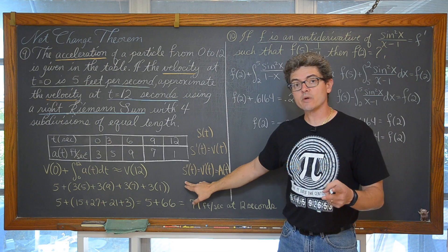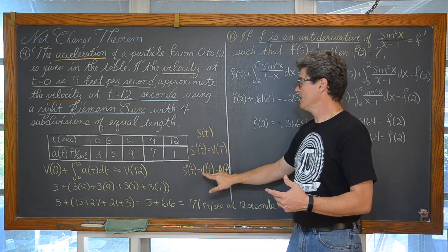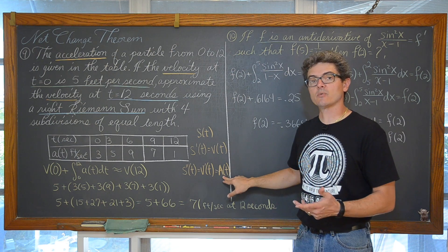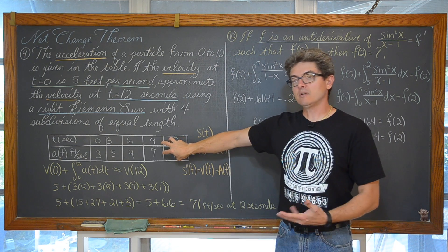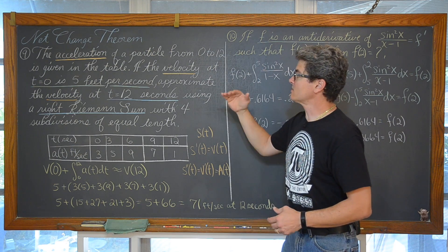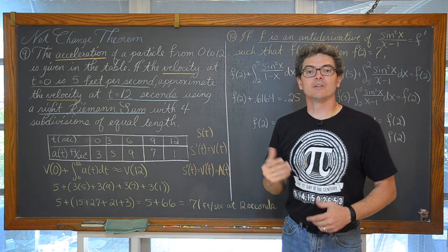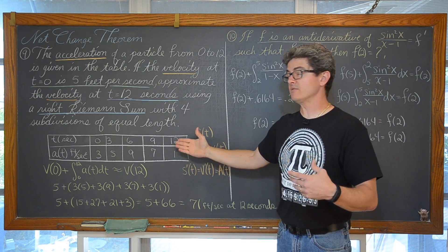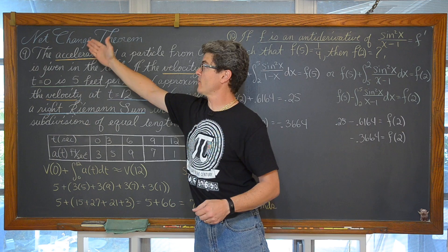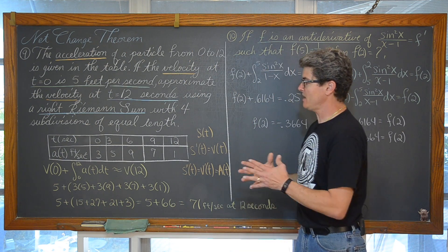And then the second derivative of the position is the first derivative of velocity. And the derivative of velocity is acceleration. So this acceleration function that we are given information about in the table is the derivative of the velocity. So again, if you integrate a rate of change and the acceleration is the rate of change for the velocity, you get an amount of change.